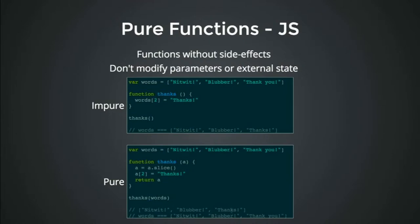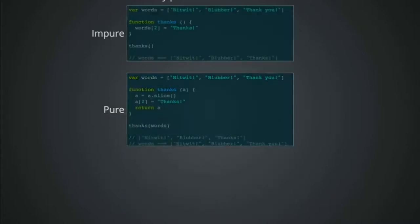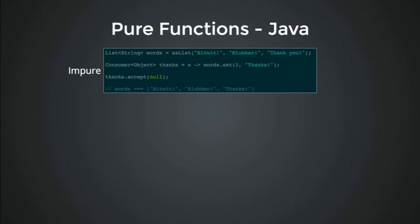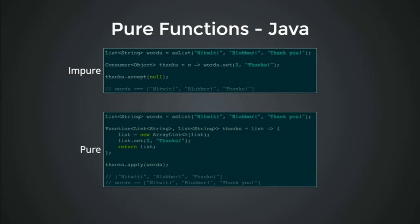So we invoke that with the actual array — it gives us the result 'one thanks', however the original words array is unchanged. A quick Java example: here we have a consumer, which is a function that doesn't produce any values, and we set number two to 'thanks', which modifies the words. Here's the pure version: we take our list as input, get a copy, update it, and return that modified copy.